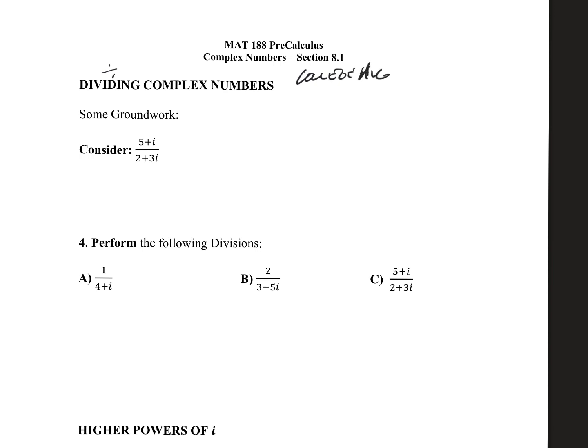Hopefully you guys remember that if I was dealing with something like 5 plus the square root of x all over 2 plus 3 square root of x, what we did to divide radicals is we actually didn't do it. What we did is we rationalized the denominator.